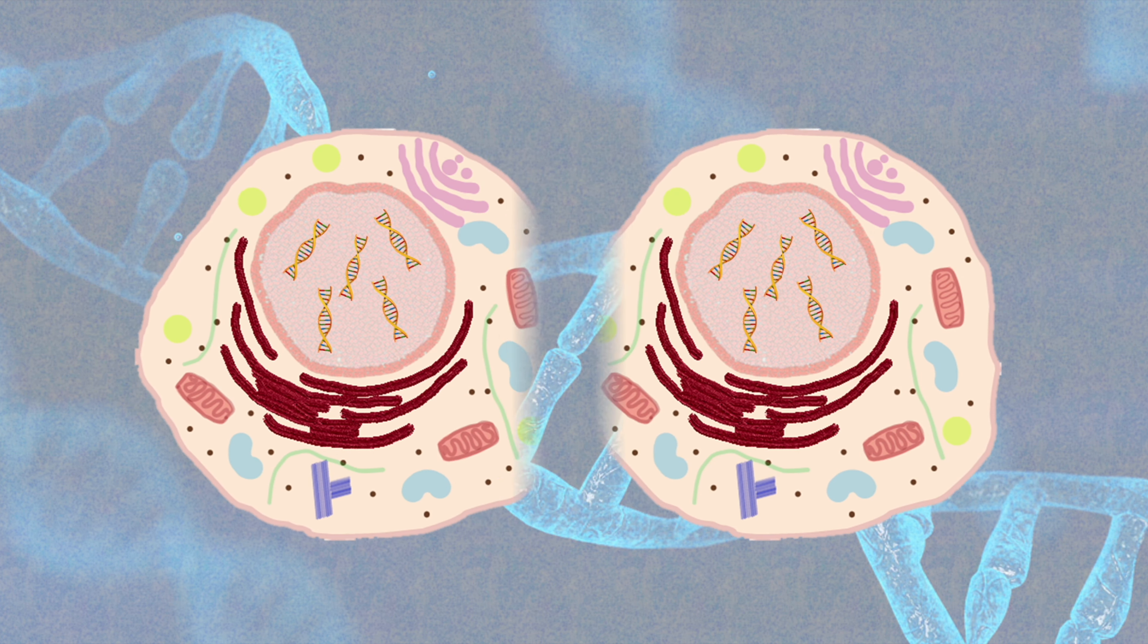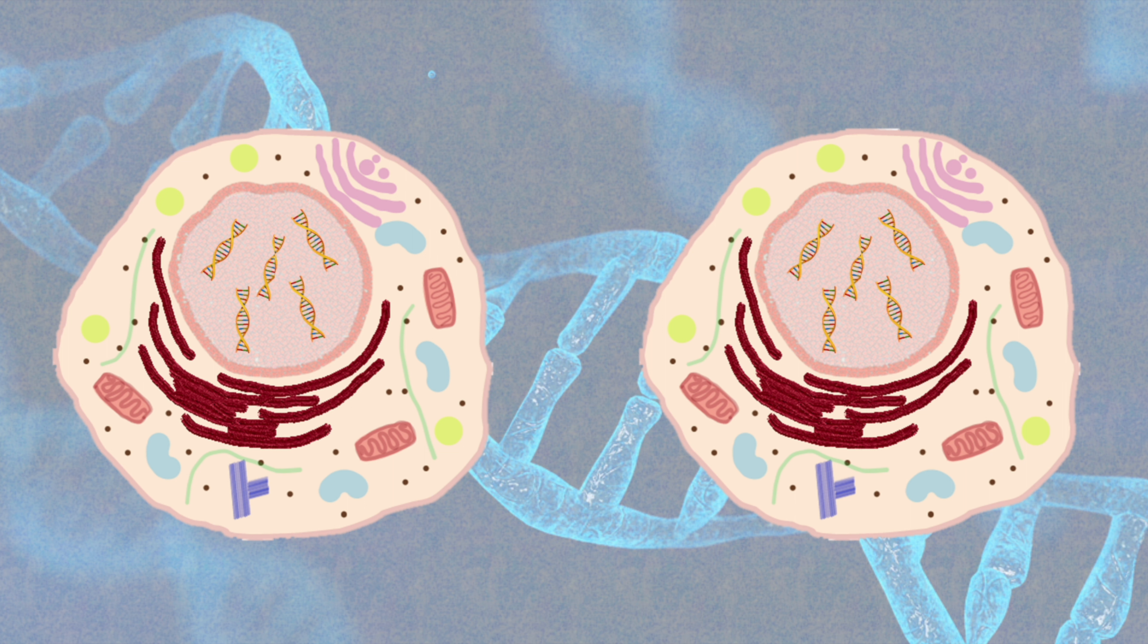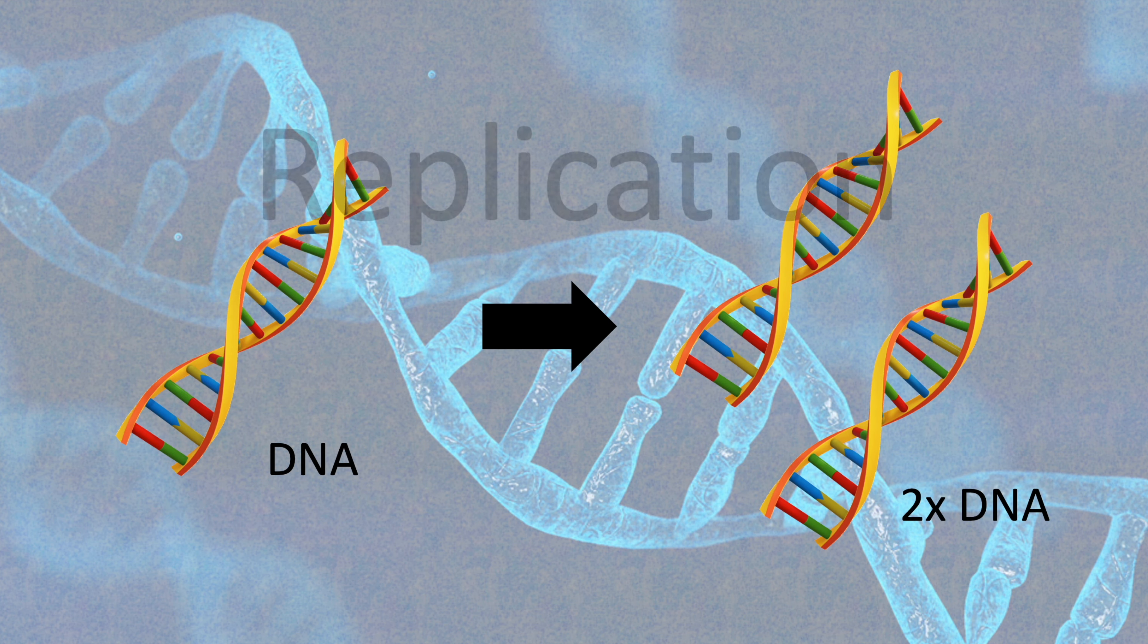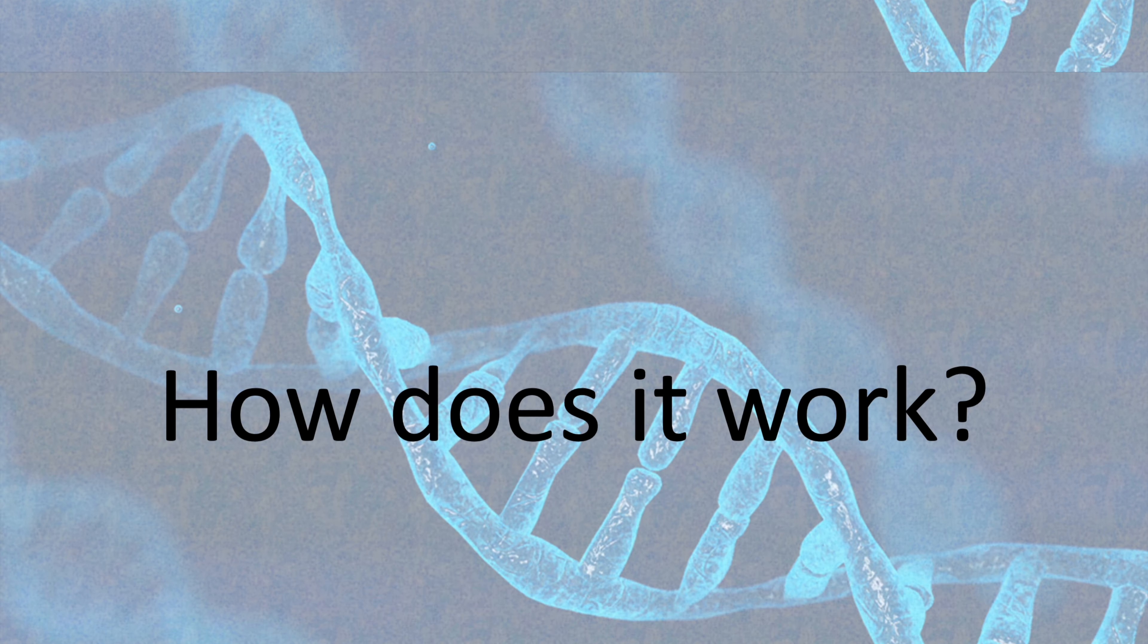During cell division, an extra copy of DNA is needed so that the two new cells will have the same genetic material as the original cell. The process where DNA is copied, so doubled, is called replication. But how does it work?